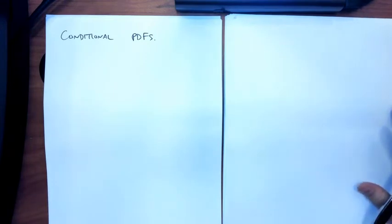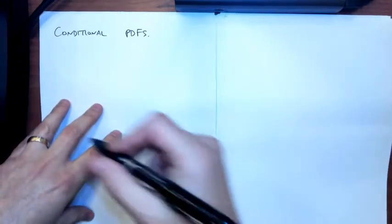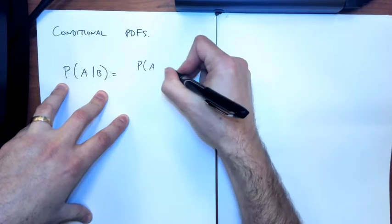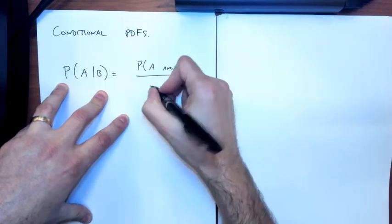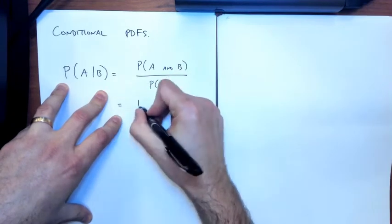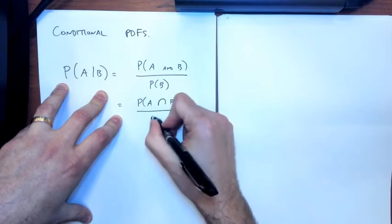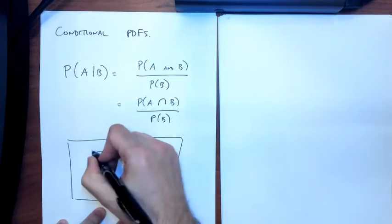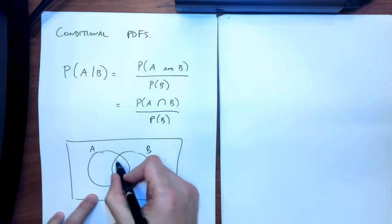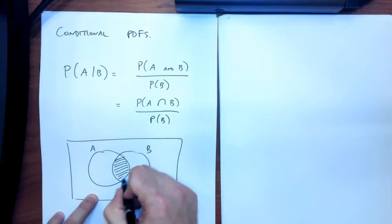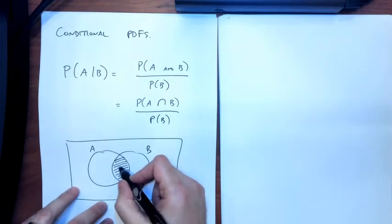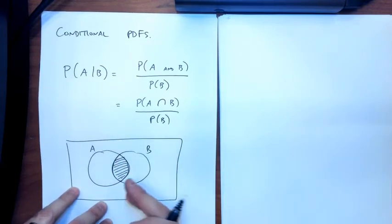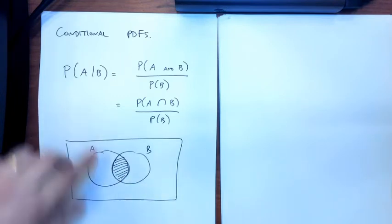Remember that one of the first equations we talked about in the class was the conditional probability equation. The probability of A given B is the probability of A and B over the probability of B — equivalently, the probability of A intersect B over probability of B. So we had this idea that if I have the sample space with two events A and B, and I tell you that B happened, I want to know what's the probability that A happened. I drew this as probability of A given B.